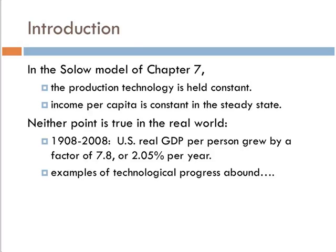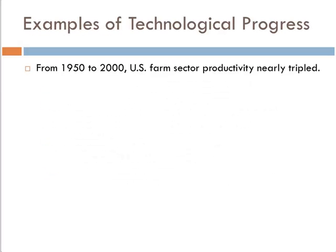One of the reasons for that is we're assuming technology is constant — but technology obviously isn't constant. Think about farming in 1908: we still had a lot of farming being done with animals — oxen, horses drawing a plow, small farms. Today we have gigantic tractors plowing fields. Major technological change has happened over that time period. Maybe more technological change over those hundred years than in all the time previous in human history. So to hold technology constant is kind of stupid — and that's what chapter 8 is all about: figuring out how to not hold technology constant.